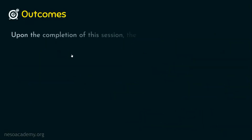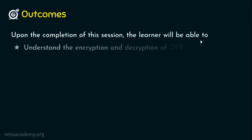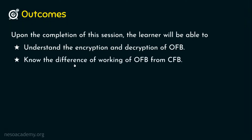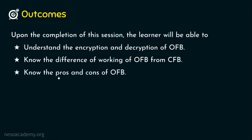Upon completion of this session, the learner will be able to achieve three outcomes. Outcome one: we will understand the encryption and decryption of OFB. Outcome two: we will know the important differences in the working of OFB and CFB. And outcome three: we will know the pros and cons of OFB.